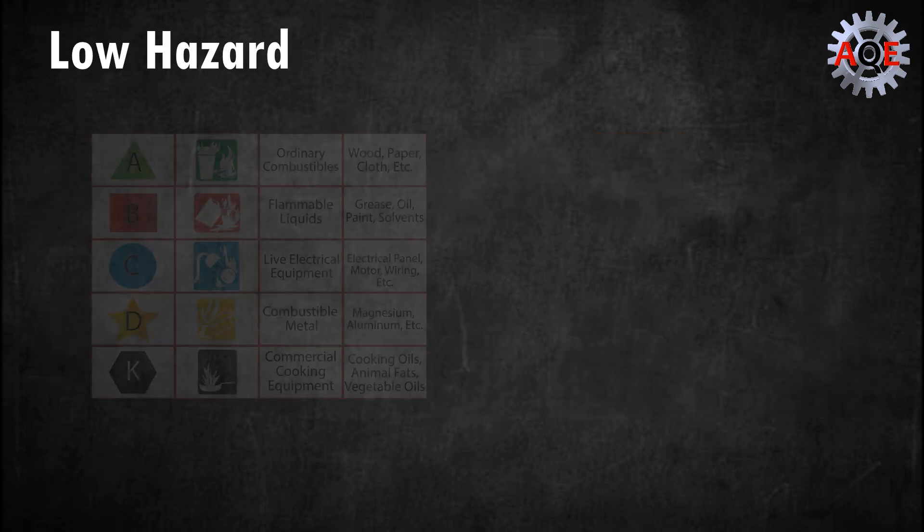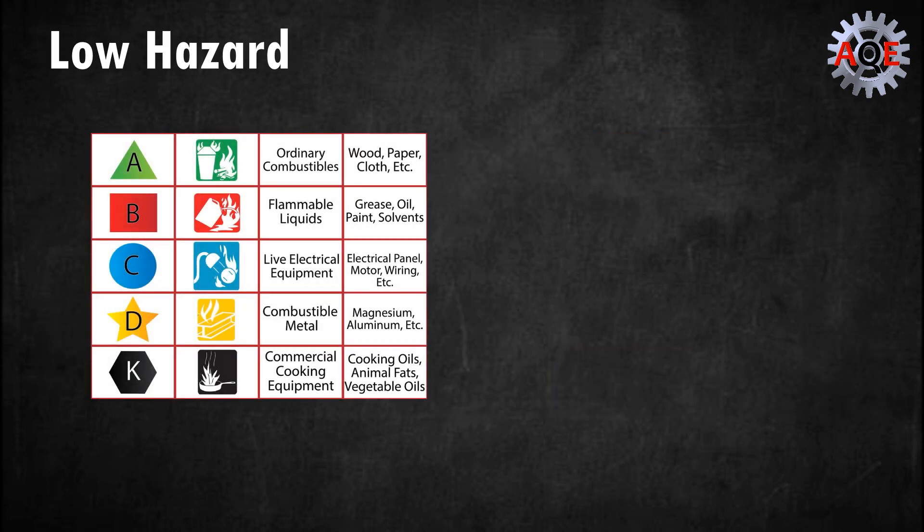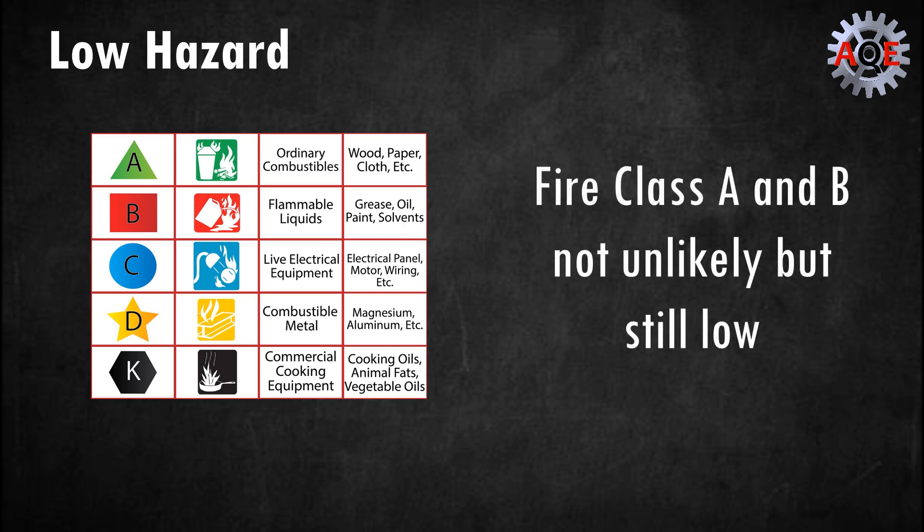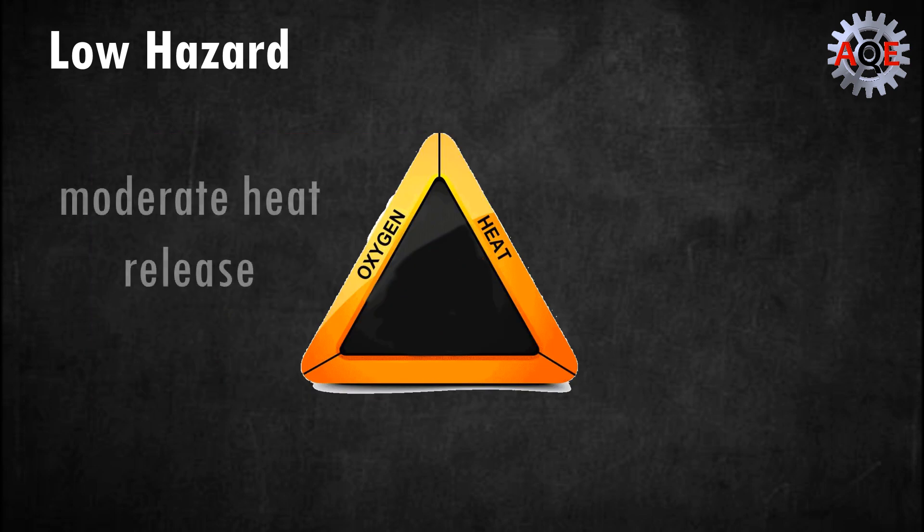Low hazard. These are locations where combustibility and the quantity of class A combustibles and class B flammables are low. Any fire that develops here would increase at a moderate rate and have moderate heat release rates.